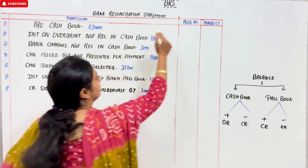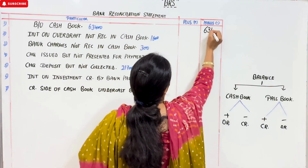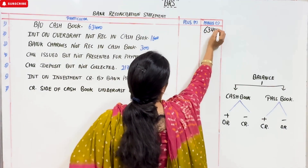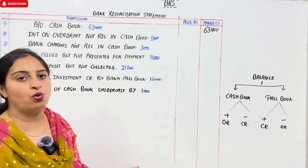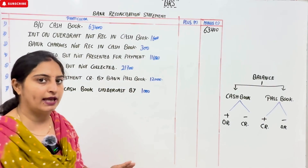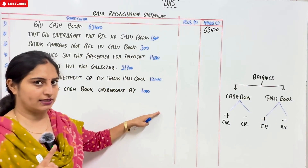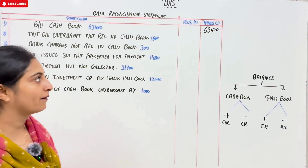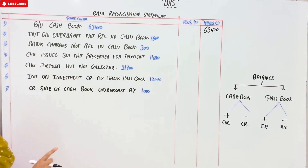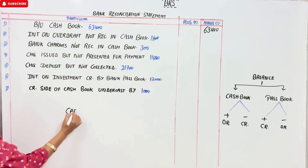How much is it? 63,400. Now in your book, you have started from positive things, but we will do all questions from one concept. The answer is the same. Now, what do we do? We do with a cash book.